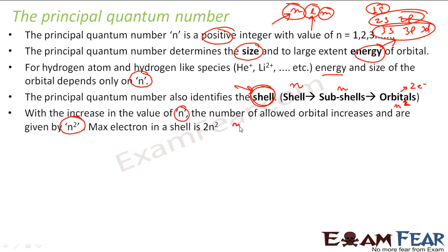For example, n equals 4. So the fourth shell, you have 4 subshells, 4 squared, that is 16 orbitals.